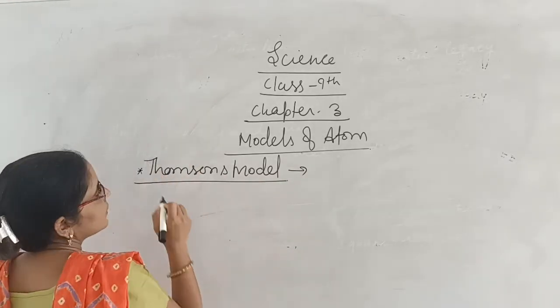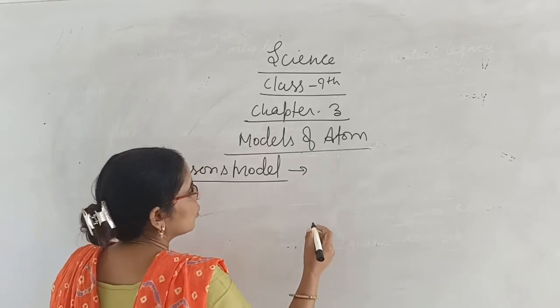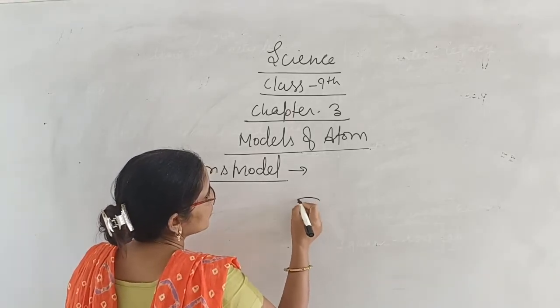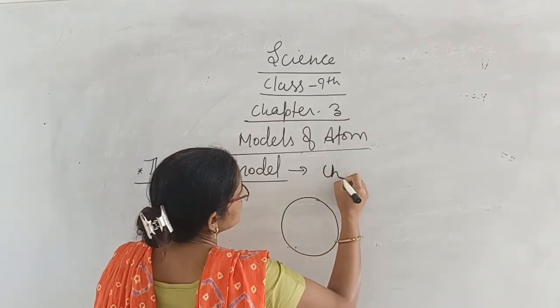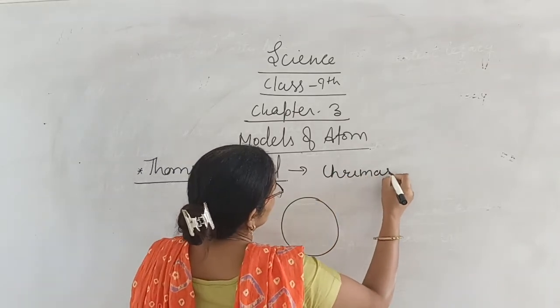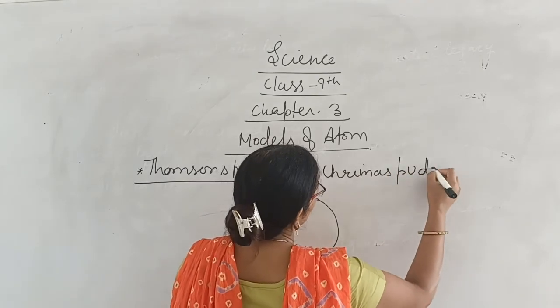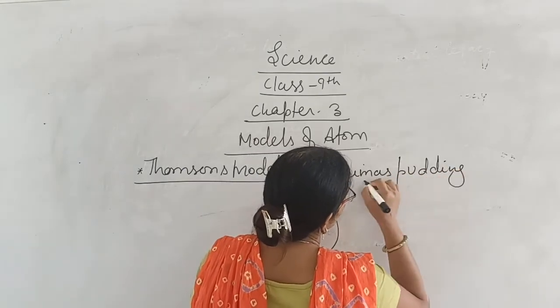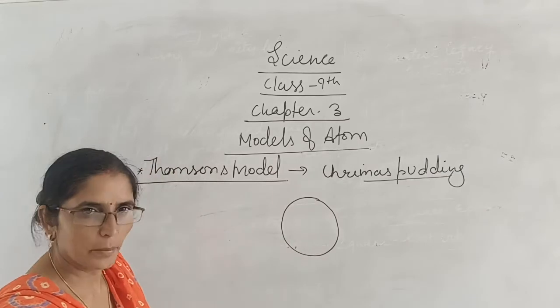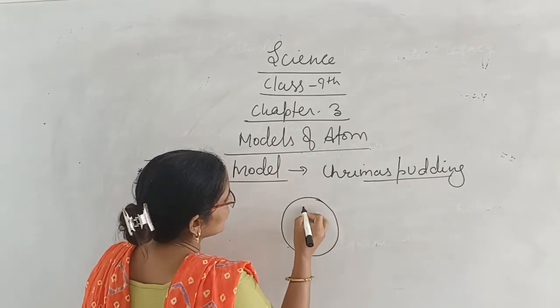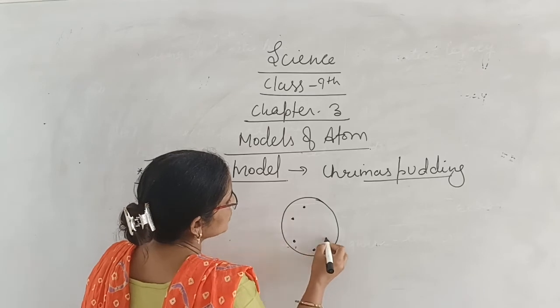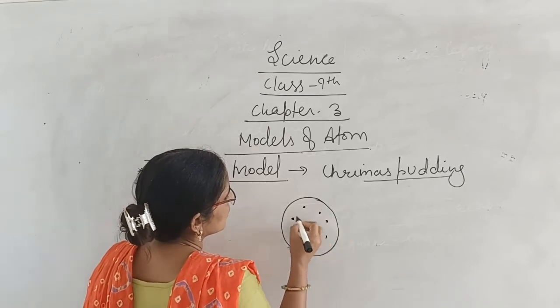Today we will discuss J.J. Thomson's model of atom. He describes it like a Christmas pudding. Christmas pudding is a dish mainly made during Christmas. It is a chocolate cake with some dry fruits.